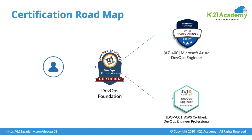Welcome to the DevOps video series from K21 Academy, where we help you in your journey to cloud from a complete beginner. Our multi-level training structure will help you learn and move ahead in your career: DevOps beginner at stage 1, stage 2 attaining DevOps foundation level knowledge and getting certified, then stage 3 is expert level DevOps engineer. Our DevOps Institute certified trainer will talk about what is DevOps and why there is so much buzz around it, covering the principles of DevOps in this lesson.